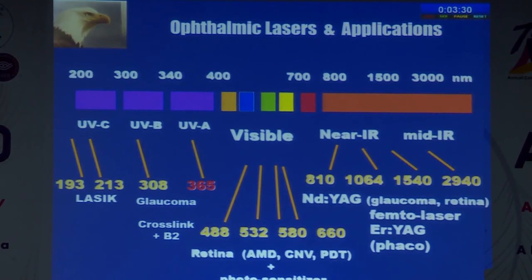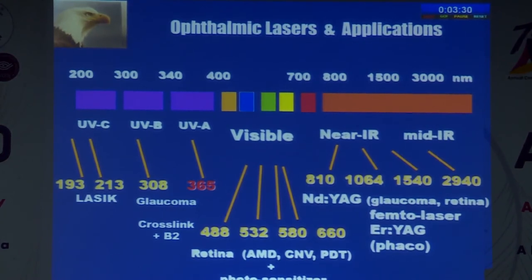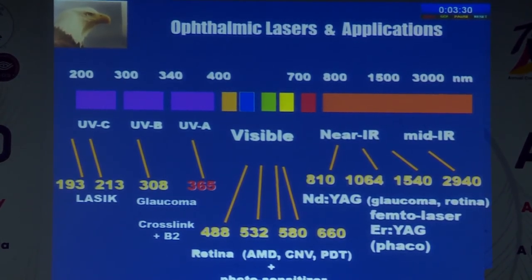Different wavelength and photosensitizer combinations allow various CXL applications. The mechanism of CXL involves UV light exciting the riboflavin photosensitizer to a triplet state (T*). The triplet state can couple to the monomer (M) in two pathways: Type 1 — direct coupling to produce radicals with or without oxygen; Type 2 — always requires oxygen to produce singlet oxygen. Without oxygen, there is no Type 2 process.